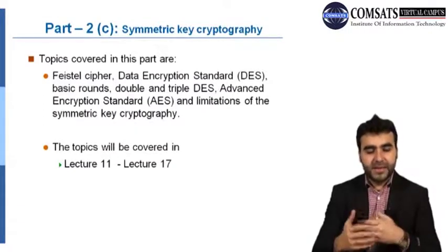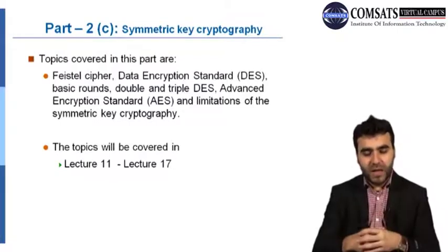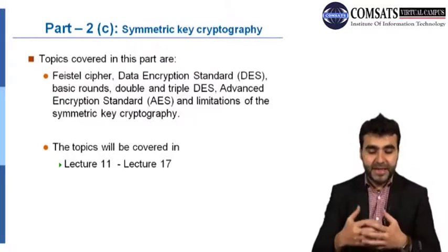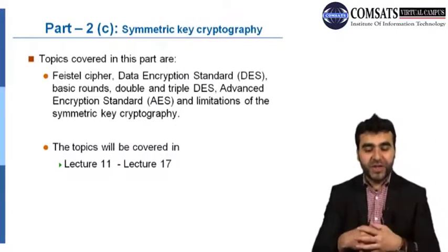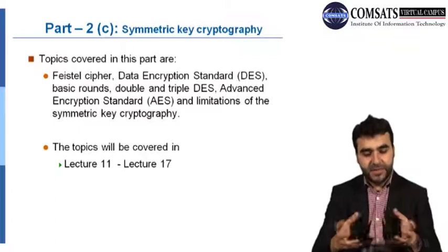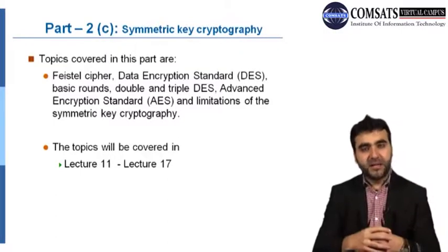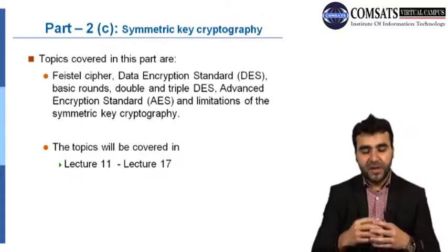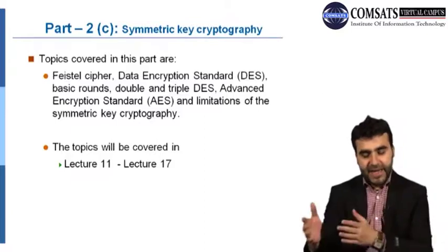Part 2C is about symmetric key cryptography, where more technical components are discussed — for example, the Feistel cipher, and a very fantastic encryption standard: Data Encryption Standard, DES. This will be discussed in detail and different rounds and variations of DES will also form part of this section. There are more sophisticated encryption techniques like Advanced Encryption Standard, AES. This will be discussed in detail and limitations of symmetric key cryptography will also be covered. These topics will be covered from lecture 11 to lecture 17.